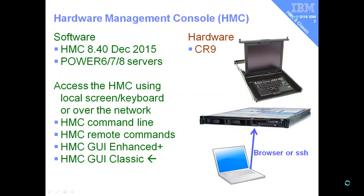So when you get an HMC, what do you actually get? Well, you get some software and hardware. On the hardware side, you'll get a 1U Intel server. You'll install the DVD into the front, and using your local screen and keyboard you'll do the install and put it onto the network. After that, you can remotely access all the HMC functions, either via a browser for the graphical user interface or SSH for the command line interface. On the software side, the current version is 840, December 2015, and that controls our Power 6, 7, and 8 servers.